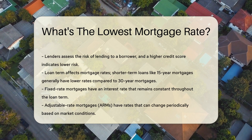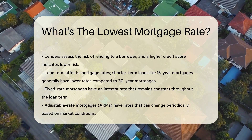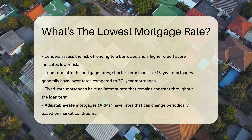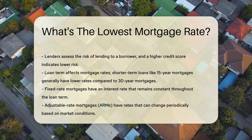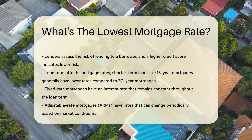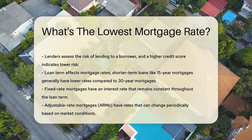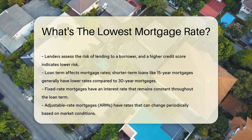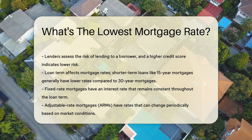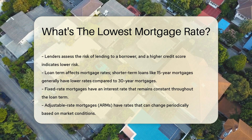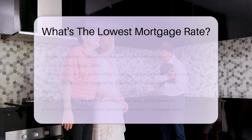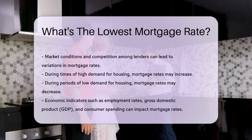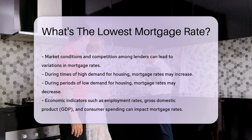The type of mortgage also plays a role. Fixed-rate mortgages have an interest rate that remains constant throughout the loan term. Adjustable-rate mortgages, ARMs, have rates that can change periodically based on market conditions.